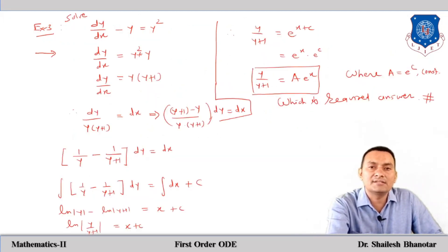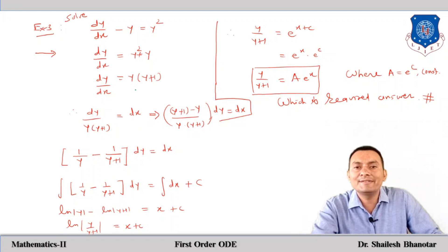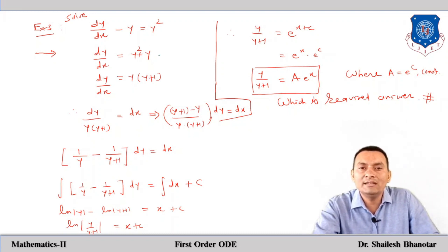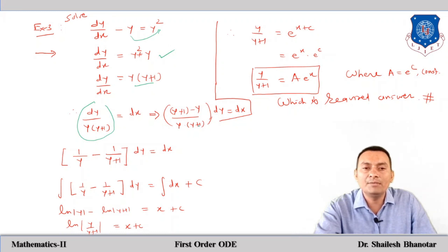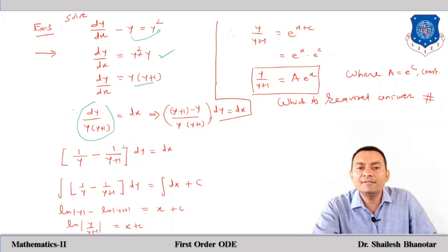Next question: dy/dx − y = y². Rewriting: dy/dx = y² + y. We separate variables: dy / [y(y+1)] = dx. On the left side, using partial fractions, we write [y+1 − y] / [y(y+1)] = 1/y − 1/(y+1). So we have [1/y − 1/(y+1)] dy = dx.